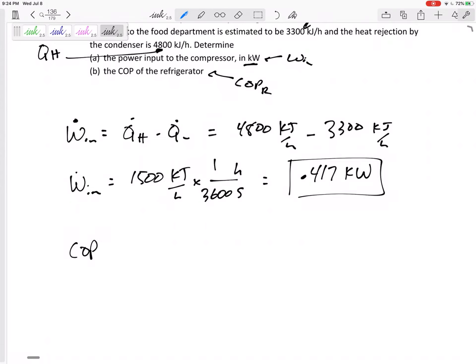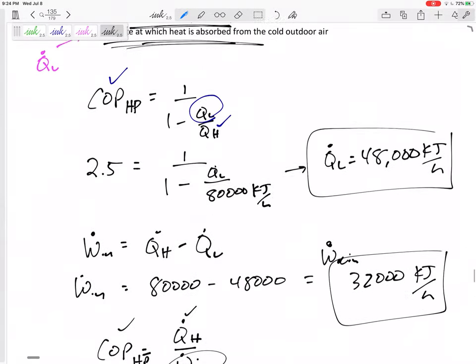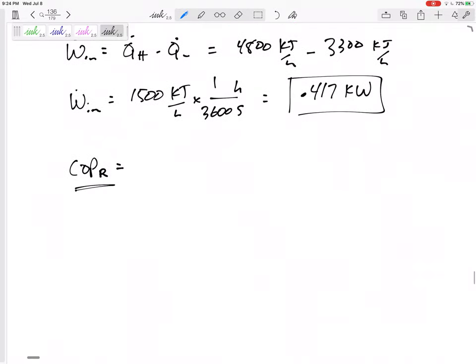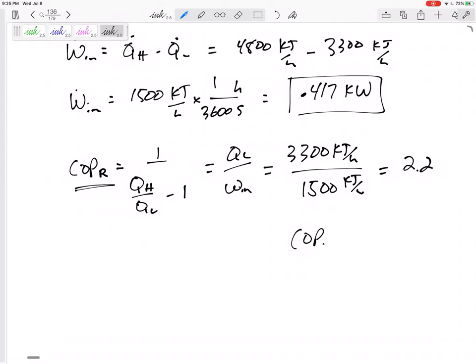And part B, the coefficient of performance, a number of equations I could do and be careful. Coefficient performance for refrigerator is different than the coefficient performance of a heat pump. Coefficient of performance of a refrigerator, I've got this as 3,300 kilojoules per hour over 1,500 kilojoules per hour. Units cancel out. This is 2.2. Coefficient performance of my refrigerator is 2.2 right here.